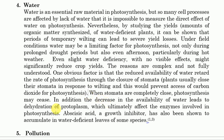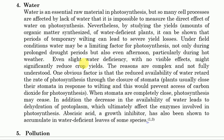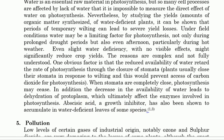When stomata are completely closed, photosynthesis may stop, and sometimes even photorespiration may occur. In addition, the decrease in water availability leads to dehydration of the protoplasm, which ultimately affects the enzymes involved in photosynthesis. Abscisic acid — a growth inhibitor — has also been shown to accumulate in water-deficient leaves of some species. Thus, water deficiency affects photosynthesis through three mechanisms: closure of stomata, dehydration of protoplasm affecting enzymes, and accumulation of abscisic acid.